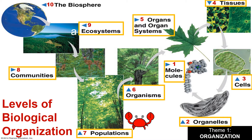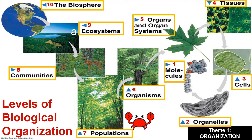Nine, ecosystems refer to the biotic and abiotic factors in an area. This includes not only the interaction between living things but also the interaction between living and non-living things. Ten, biosphere consists of all the livable parts of the Earth — all spaces inhabited by life, including spaces in land, water, and air.